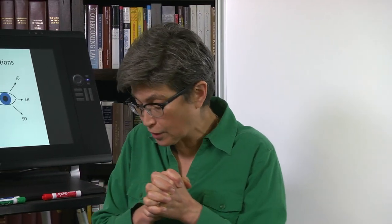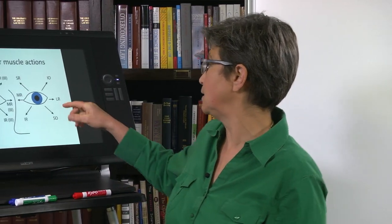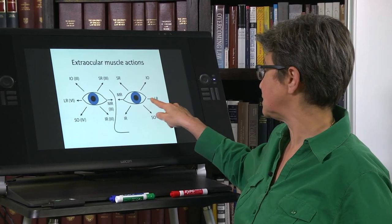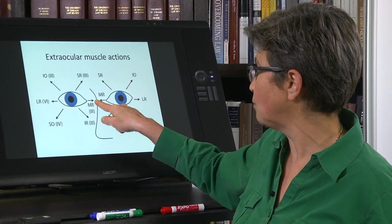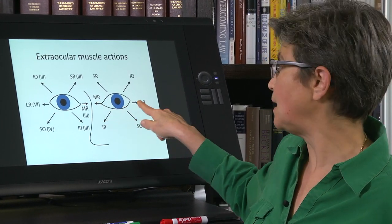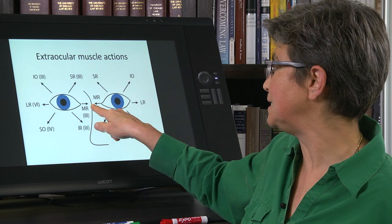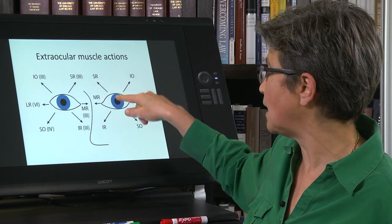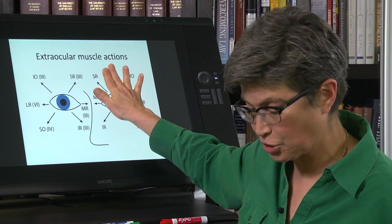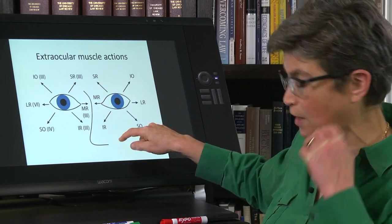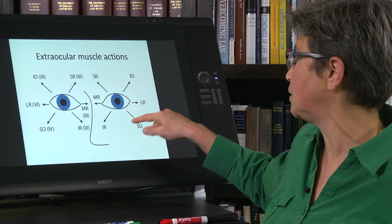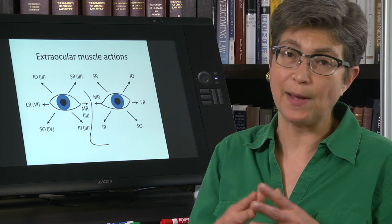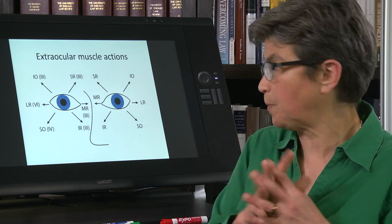One way to look at this is just a summary shown here. So the lateral rectus is going to abduct the eye. The medial rectus is going to adduct the eye. ABduct the eye. ADduct the eye. And then the superior rectus has an action of elevation, whereas the inferior rectus has an action of depression. The superior oblique and inferior oblique, they're reversed from what you would expect. And we will touch upon that in a moment.